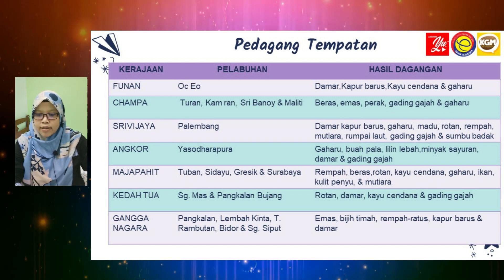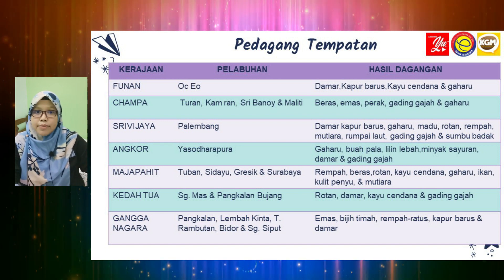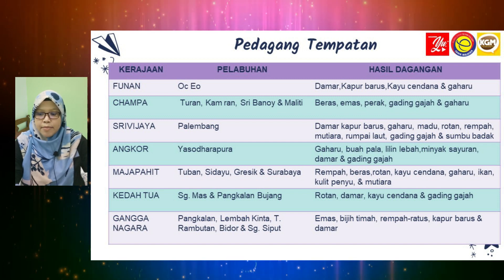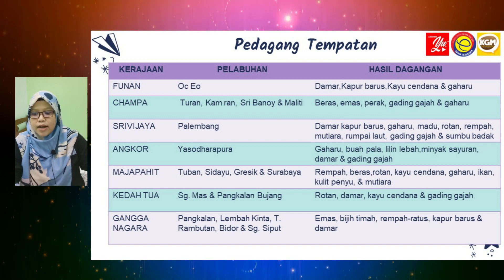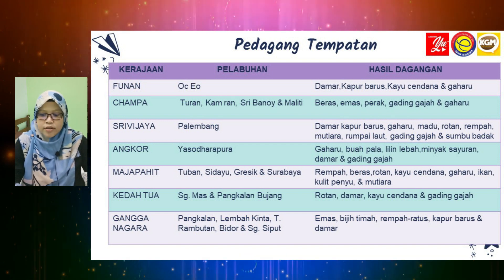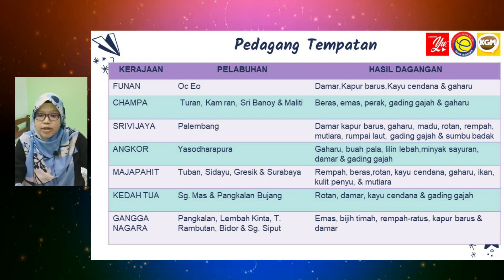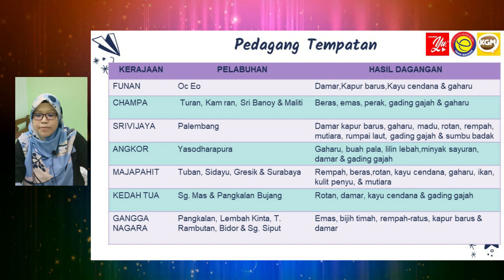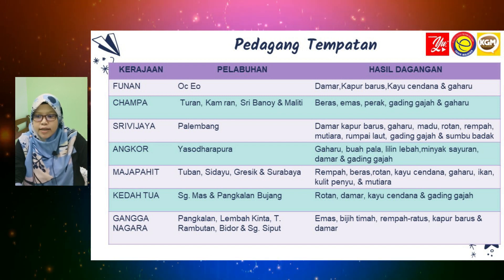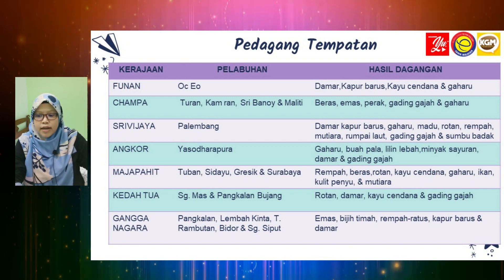Majapahit pula — pelabuhan di Tuban, Sidayu, Gresik dan Surabaya, hasil dagangan adalah rempah, beras, rotan, kayu cendana, gaharu, ikan, kulit penyu dan mutiara. Kedah Tua — pelabuhan di Sungai Emas dan Pangkalan Bujang, hasil dagangan adalah rotan, damar, kayu cendana dan gading gajah.